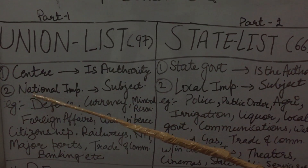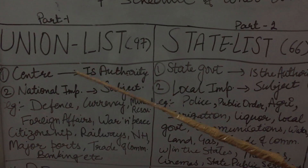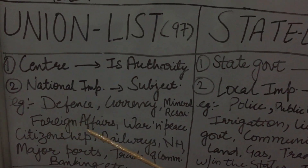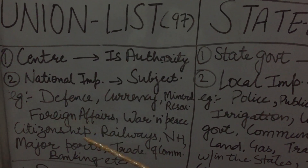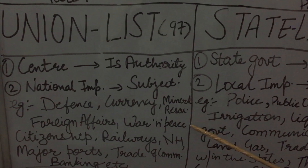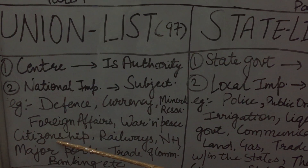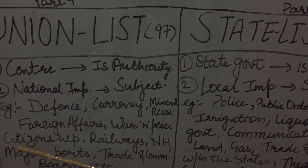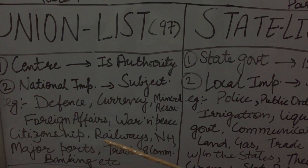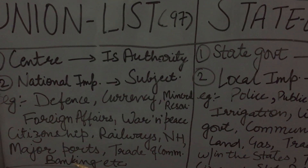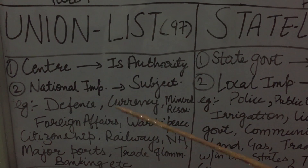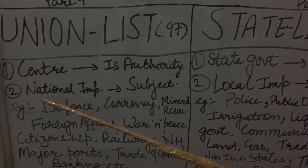Kaun se subject iske andar aayenge? Jo nationally important rakthe hain hamare nation ke andar. For example, defense, currency, mineral resources, foreign affairs — dusri country ke saath hamare lane-dene ki baatein. War and peace, citizenship — jo aajkal hamare charchit hai — citizenship amendment, railways, national highways, major ports, trade and commerce, banking, etc. I hope these examples are enough to understand what nationally important means.